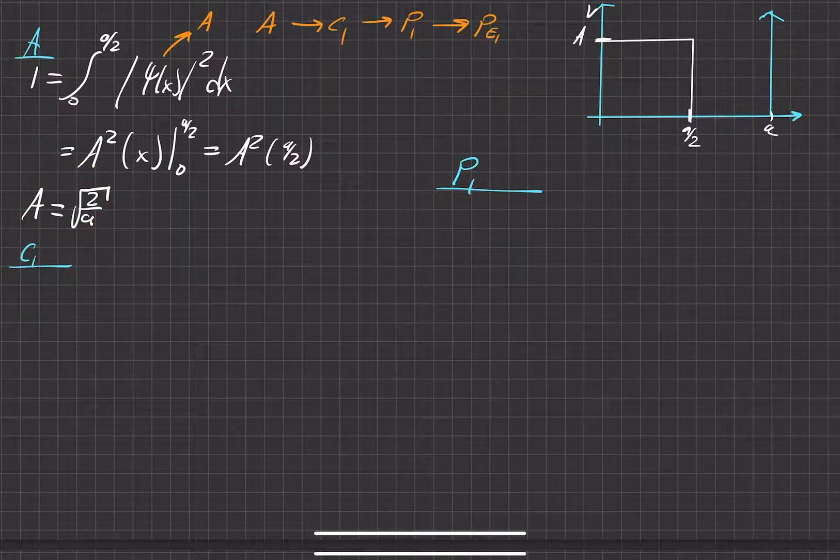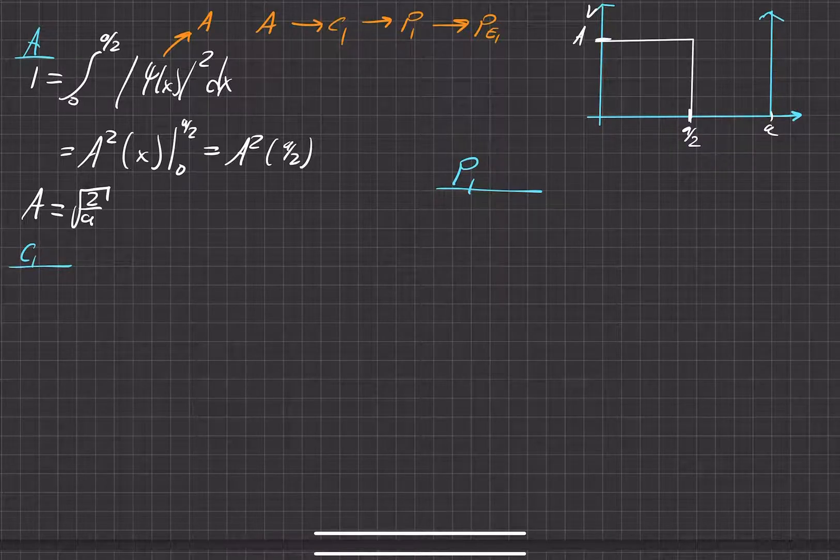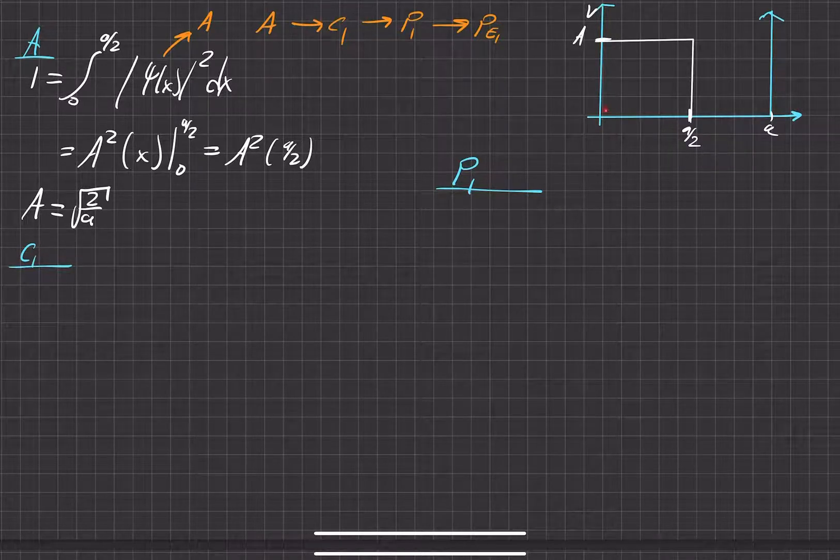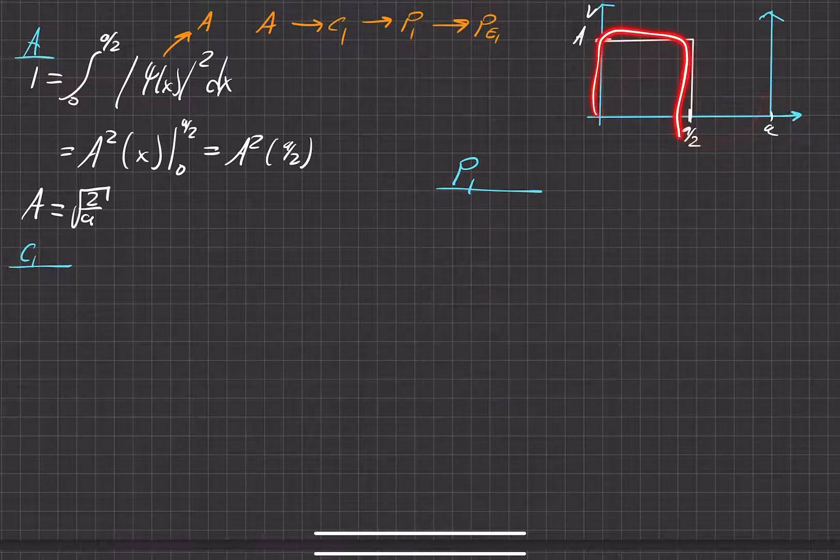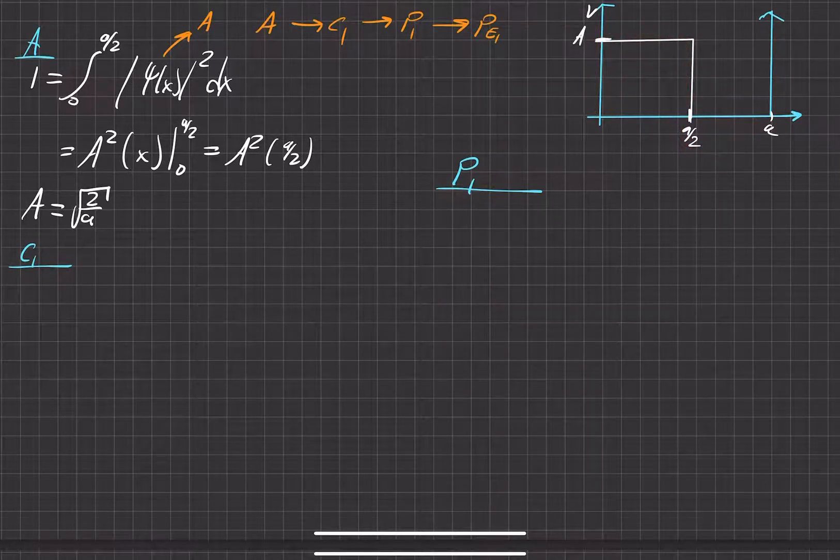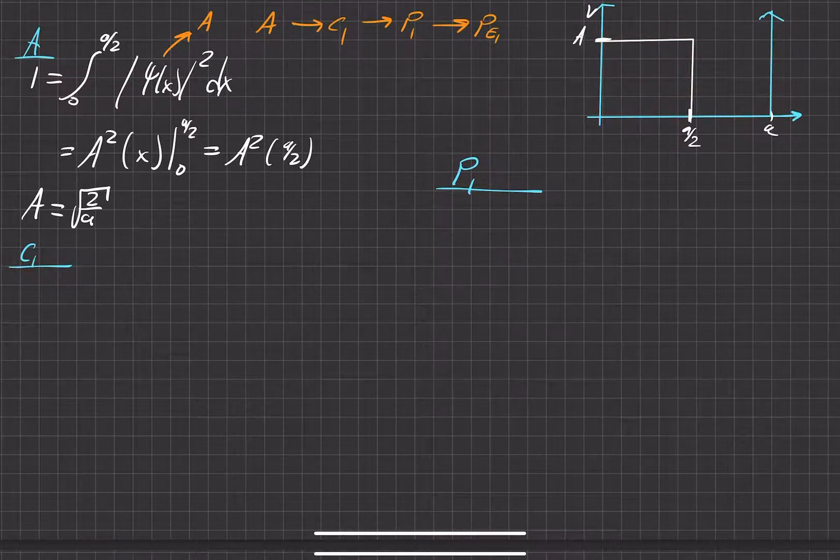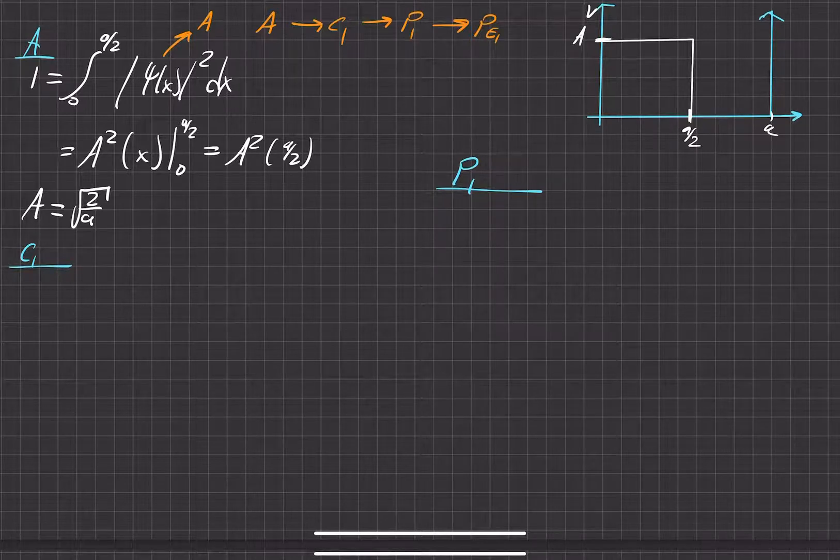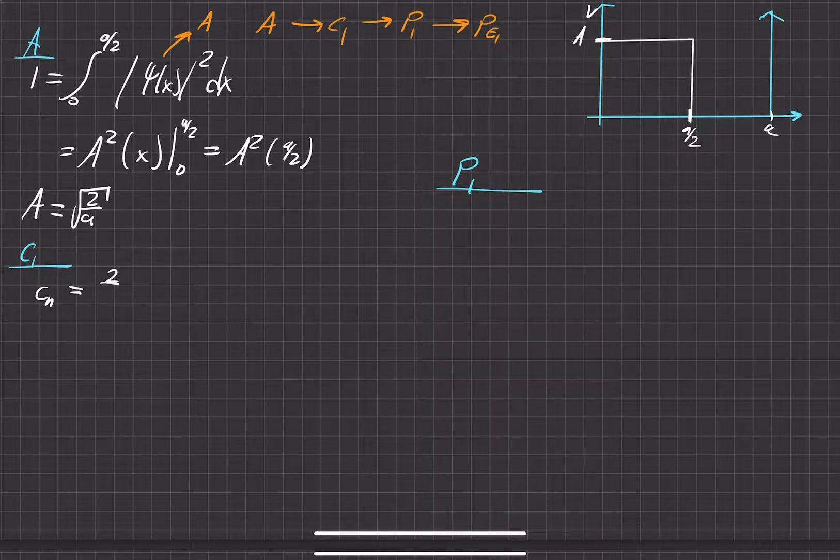And now we've got to solve for the coefficient of the first state. So just a little background. Remember, this wave function is actually a superposition of a bunch of different wave functions, a bunch of different sine and cosine functions until it ends up equaling a perfectly square wave function right here. So the first coefficient that exists for the first state is equal to, this is done using Fourier's trick.